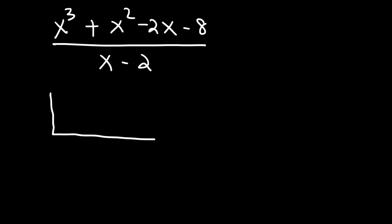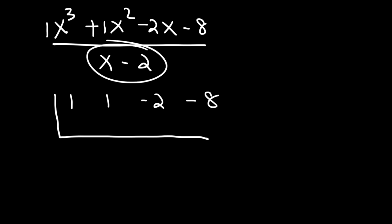So let's begin by writing the coefficients. So it's 1, 1, negative 2, negative 8. Now, since we have x minus 2, we need to change the negative 2 to a positive 2. If you set x minus 2 equal to 0, you'll get x is equal to 2.